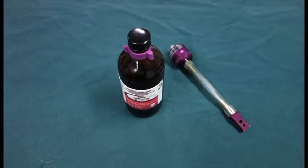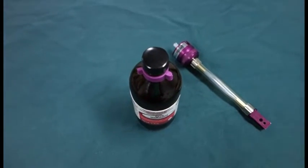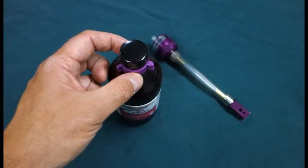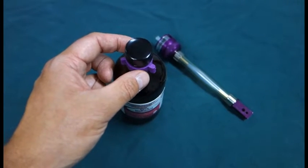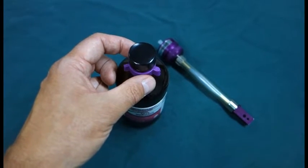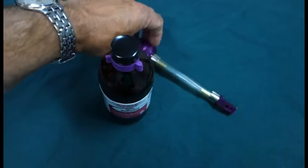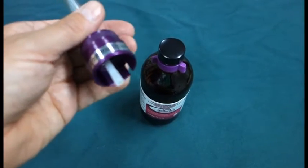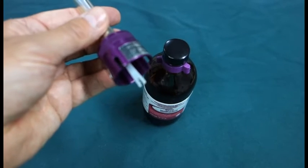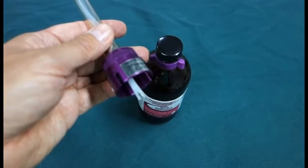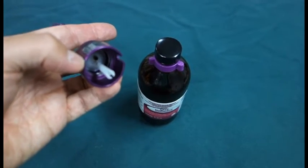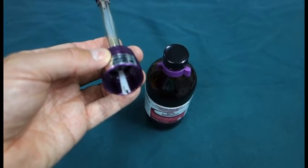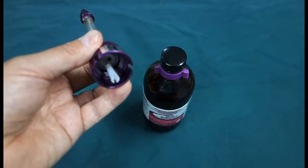You'll notice first of all that the bottle of isoflurane has a purple keyed filling system. Each type of anesthetic agent will have a different selection of nobbles on the top of it, and those nobbles correspond with a specific filler. This is an isoflurane filler, so you'll find that the nobbles on the top of the bottle will correspond with the pieces that have been cut out of the filler. That's so basically you don't get different types of anesthetic agent mixed together.